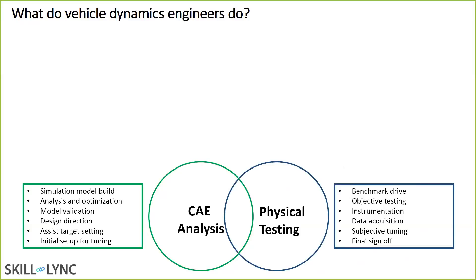On the opposite side, you have physical testing — done on the track, on the ground. Here we do benchmarking, test competitive vehicles, make measurements, and use instrumentation like accelerometers and sensors to acquire data. During the final stages, there's subjective tuning and sign-off. When a vehicle is built, the final tuning before production is done on the proving ground, not using a CAE tool. CAE can only give direction; fine tuning is always done through physical testing.